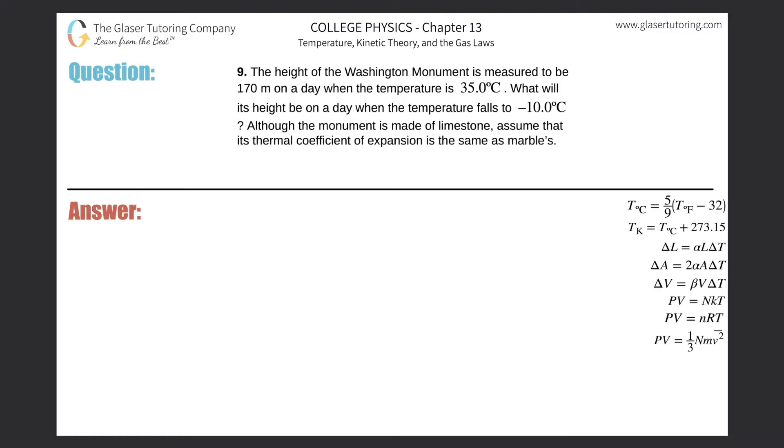Number nine: the height of the Washington Monument is measured to be 170 meters on a day when the temperature is 35 degrees Celsius. What will its height be on a day when the temperature falls to negative 10 degrees Celsius? Although the monument is made of limestone, assume that its thermal coefficient of expansion is the same as marble's.